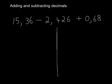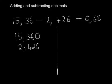So the first part is we're going to subtract 15.36, and from that we're going to subtract 2.426. We've got to have the same number of decimals in each part, so I have to add a 0 to the 15.360.